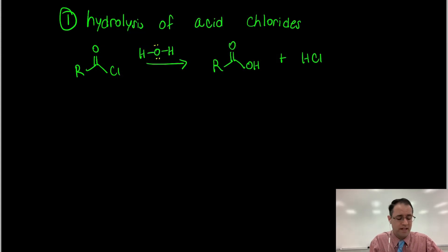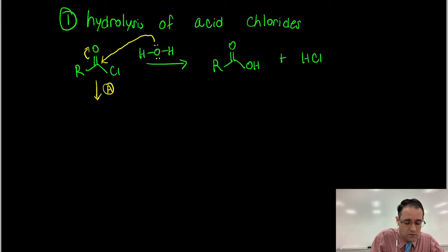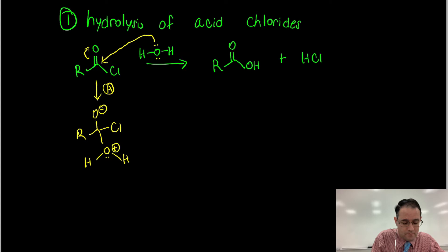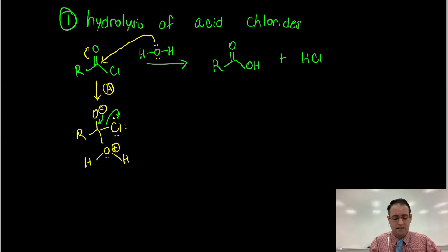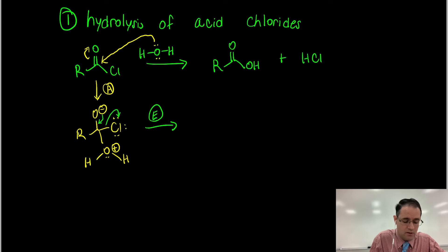Acid chlorides are just so reactive they break a lot of rules, but you always have this tetrahedral intermediate. Water is going to directly attack - the chlorine is so electronegative the carbonyl carbon is quite electron deficient. You get the tetrahedral intermediate, and then chloride is expelled. You always want to kick off the leaving group before doing any acid-base manipulation, so we eliminate the chloride and form the protonated carboxylic acid.